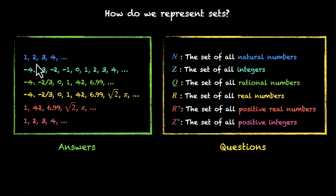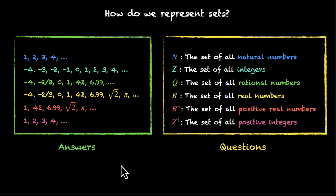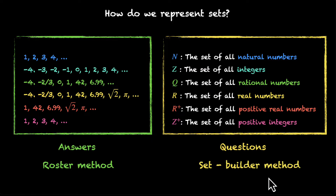Either you can say that 1, 2, 3, 4 and so on is a set, or you can say that we're looking for a set of all natural numbers — both of them work. The technical terms are roster method, whenever we list down answers, and set builder method, whenever we use questions. Let's look at both of them more closely.